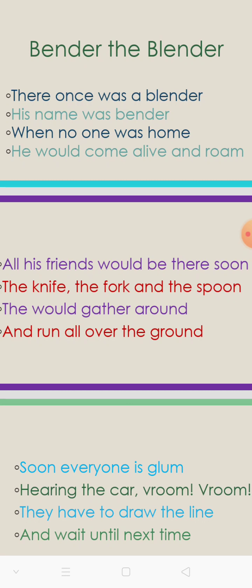Ground மாரி kitchen சுத்தி சுத்தி விளையாடுவார்கள். Soon everyone is glum. Glum means வாடி போறது. கொஞ்ச நேரம் ஆனவுடன் அவர்கள் வாடி போகிறார்கள். Hearing the car vroom vroom — car-ஓட sound கேட்டவுடன் அவர்கள் வாடி போகிறார்கள். They have to draw the line. Draw the line means நாம் செய்த வேலையை முடித்துக்கோ. And wait until next time — இன்னொரு சந்தர்ப்பம் கிடைக்கும் வரைக்கும் wait பண்ணோம். அதுதான் இந்த poem-ஓட meaning.